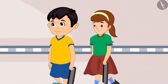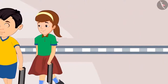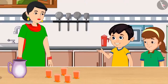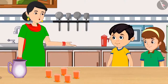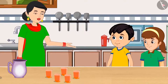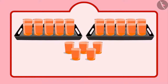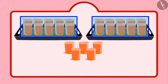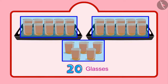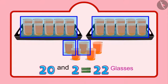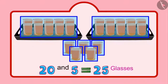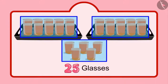Together, Chotu and Aati distributed all the glasses filled with sherbet. But they needed more sherbet. Mummy, give us some more glasses of sherbet. Okay, Chotu. Here you go. I have made some more sherbet. Keep it in this plate and take it outside. Children, can you tell me how many glasses of sherbet were distributed by Chotu and Aati together? First of all, Chotu distributed 2 groups of 10 glasses, that is 20 glasses of sherbet, and then 5 more glasses. That makes it 21, 22, 23, 24, 25. Chotu distributed 25 glasses of sherbet.